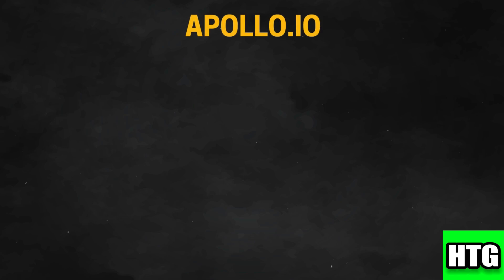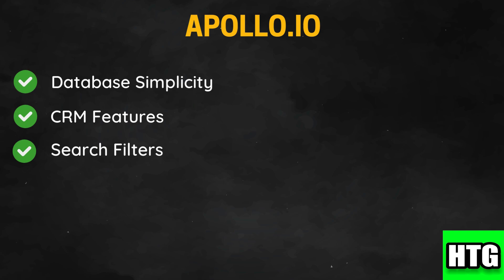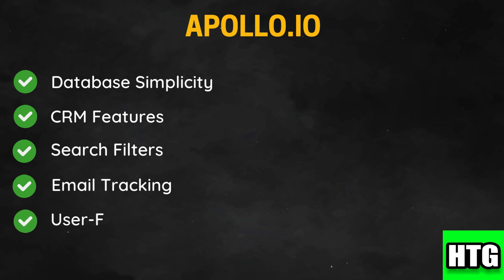Beginning with Apollo.io: it provides a vast database with millions of verified contacts, making it perfect for lead generation. It offers built-in CRM capabilities to manage contacts and outreach efforts all in one place. Users can narrow down prospects based on specific criteria, increasing the chances of finding the right leads. The platform includes email tracking features, enabling users to monitor open and response rates effectively. Its intuitive design makes it easy for users to navigate and utilize all the features without much hassle.